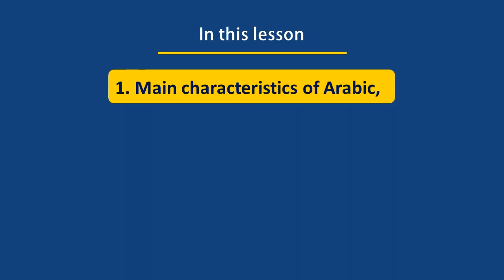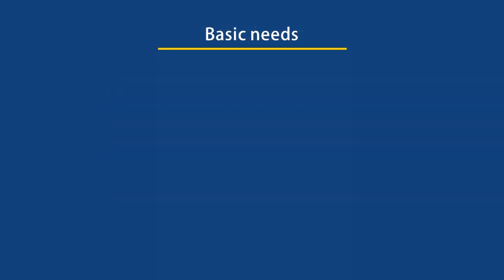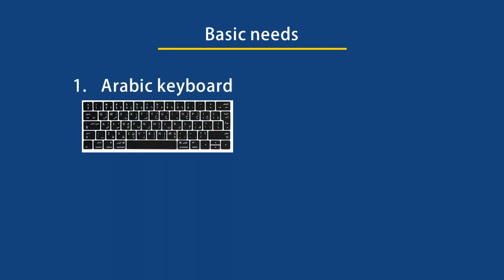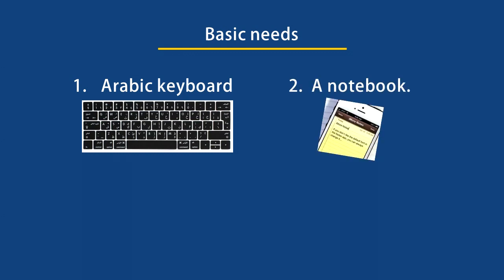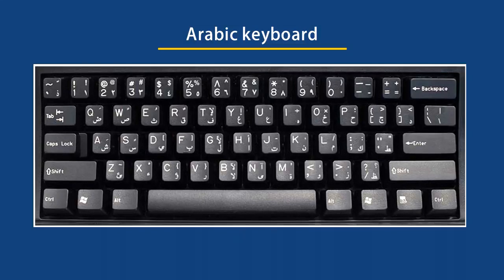In this lesson we'll cover some main characteristics of Arabic and the alphabets, both vowels and consonants. In order to follow the classes, please prepare an Arabic keyboard for exercises, and a notebook for keeping important notes and new words. By the end of this course you will have a big vocabulary. If you have Arabic friends, try to practice with them. I've also created a Facebook group for this course — let me know in the comments if you'd like to join and I'll send you the link.